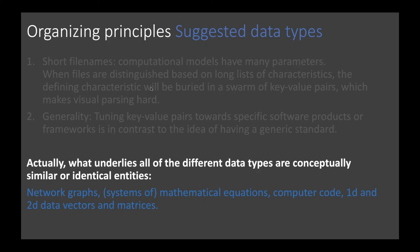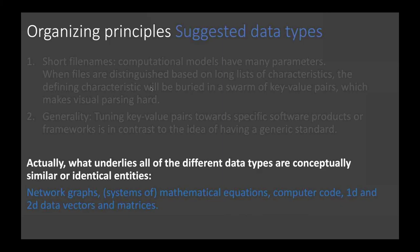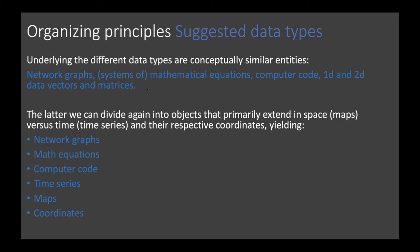Maybe if we think about what actually underlies all the different data types, even across all these different diffusion models and data types, most of the time it is the same: network graphs (descriptions of nodes and connections), mathematical equations or systems of equations, computer code, and 1D and 2D data vectors or matrices. We could also have higher-dimensional tensors, but we can usually break those down into a two-dimensional format.